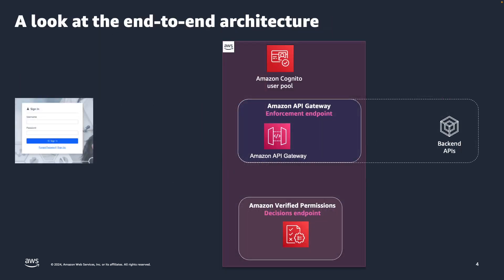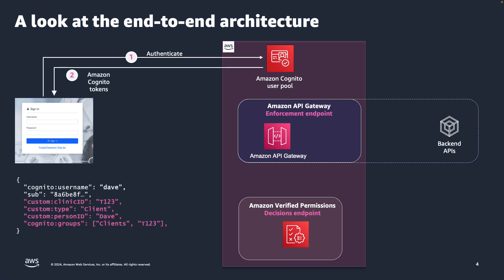Let's take a look at this end-to-end architecture flow to understand how Verified Permissions operates at runtime. In this diagram, we deploy an application using Amazon Cognito as the identity provider. A user logs in, whether locally or via federation. Cognito generates a custom ID and access tokens. With these tokens, the user can request application endpoints.